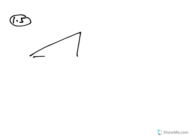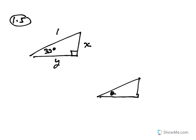In the second question, called 1.5, you were given a triangle with a 33-degree angle and hypotenuse of 1, and they wanted to know the other two sides. In general, if you have an angle and the hypotenuse is 1, the opposite side is going to be sine and the adjacent side is going to be cosine.